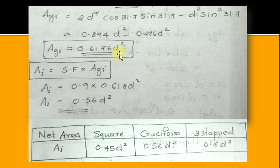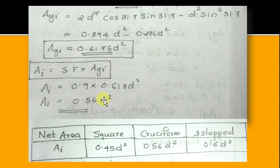This is the maximum value of theta. Substituting this value back into the equation for A_GI gives A_GI = 0.618 D². Multiplying by the stacking factor gives net area = 0.56 D². In the table below, the net areas of square, cruciform, and three-stepped cores are given.